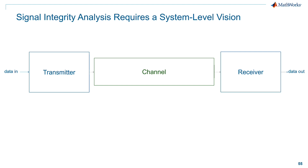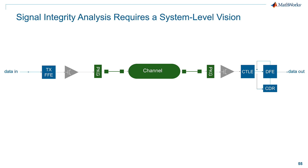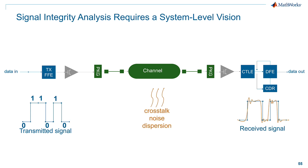When we look at signal integrity analysis, you have to have a system-level vision. This is a simplistic block diagram with a transmitter, receiver, and a channel, but when you peel the onion, you need a holistic view. On the transmitter you need to model equalization such as feed-forward equalization; you need to model the channel with package, connectors, and everything that makes up that channel. On the receiver there's a lot of complexity — you have to model CTLEs, DFEs, and CDRs for full system performance. Ultimately, as you transmit ones and zeros down the channel, impairments are introduced through crosstalk, noise, dispersion, and loss, making it very difficult to recover the signal without DSP, IBIS-AMI, or equalization algorithms.